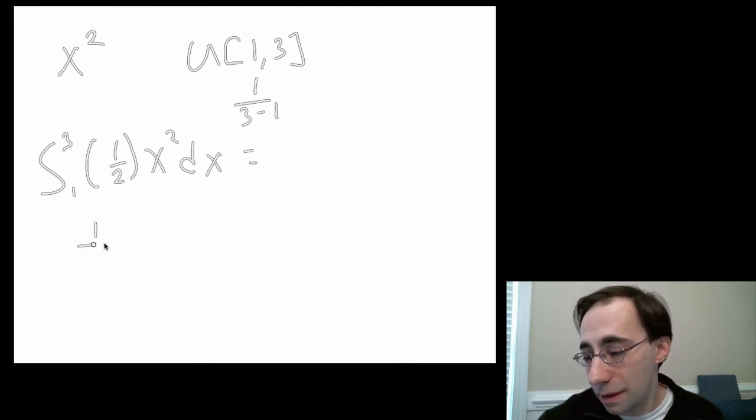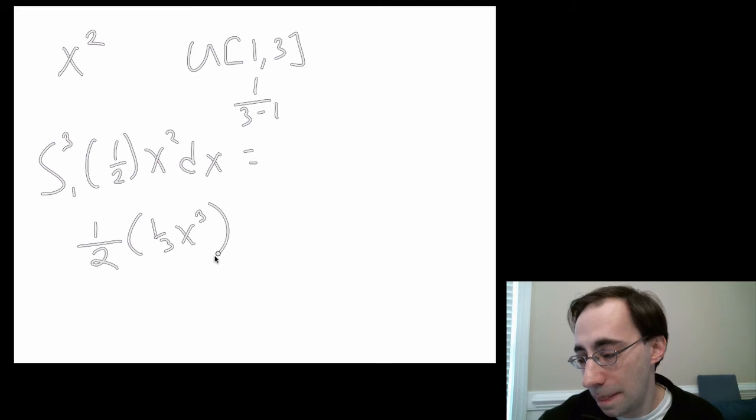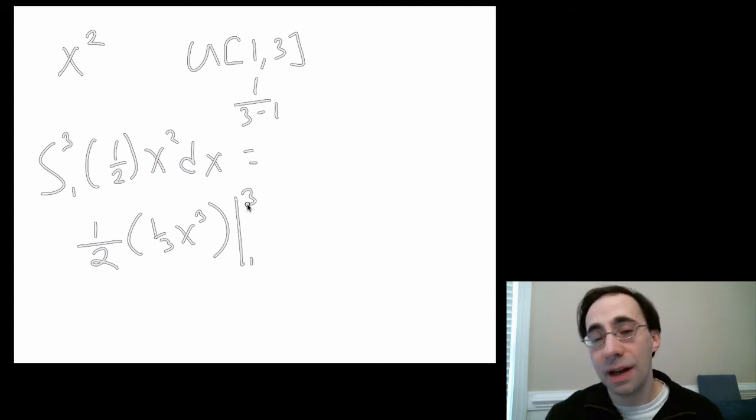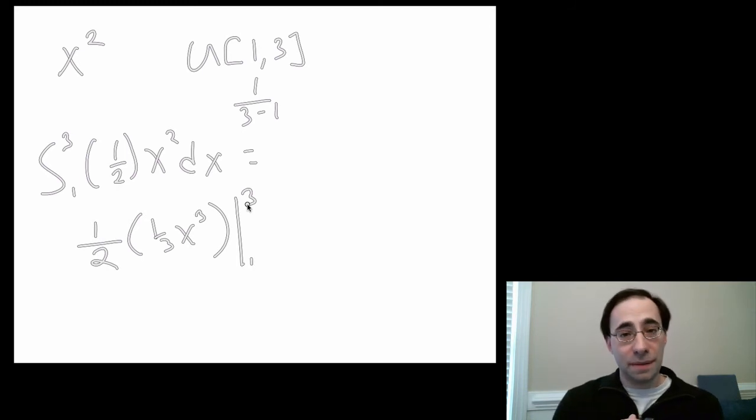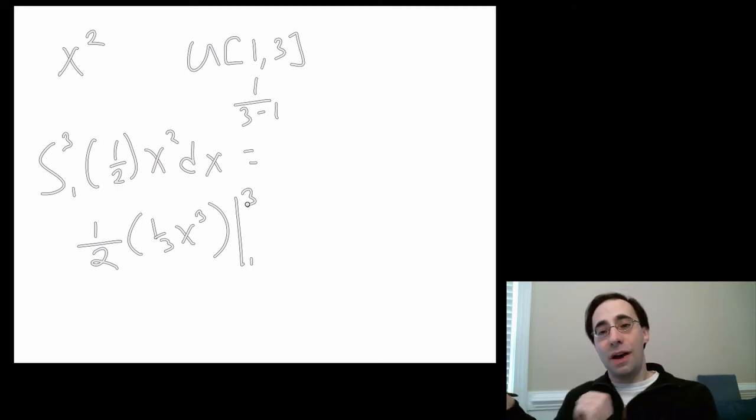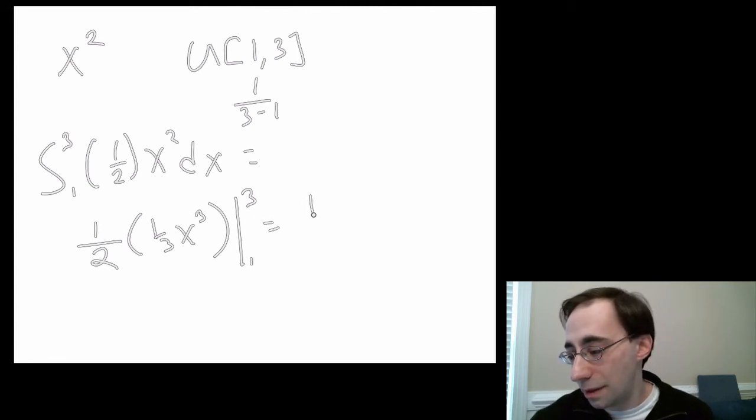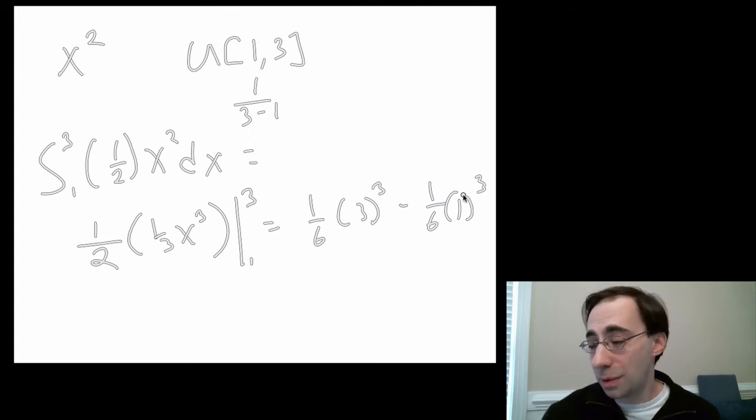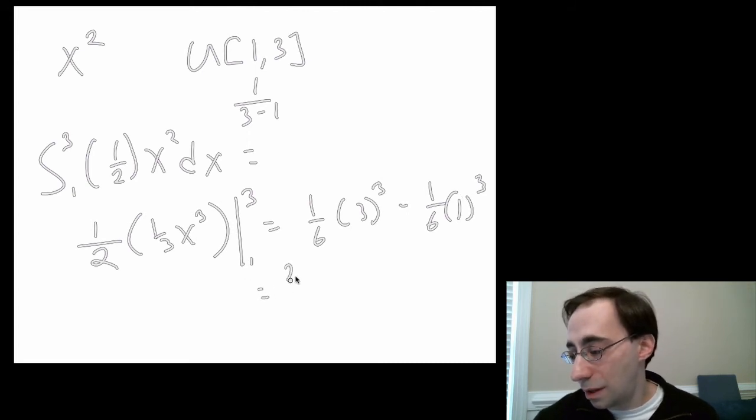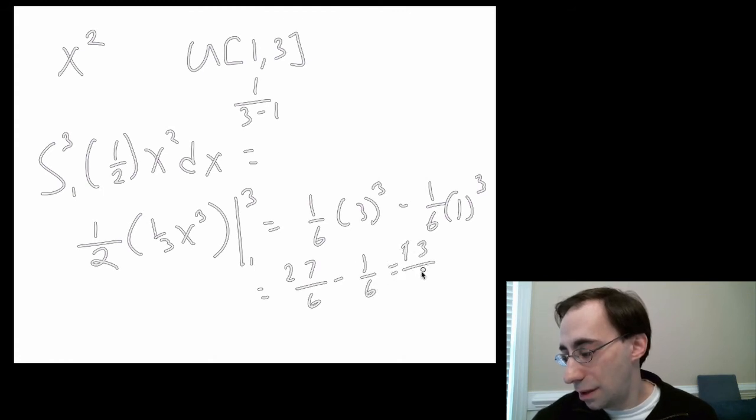So this is going to be 1/2 times 1/3 x³, evaluated from 1 to 3. This vertical line means evaluated at 3, then evaluated at 1, and subtract the evaluation at 1 from the evaluation at 3. In other words, 1/6 times (3³ minus 1³). 3³ is 27. That's 27/6 minus 1/6, or 13/3. There you go.